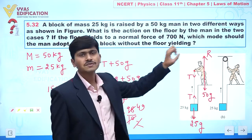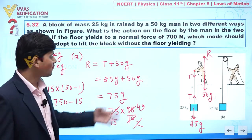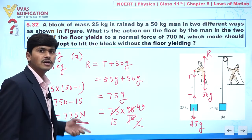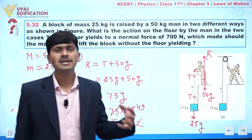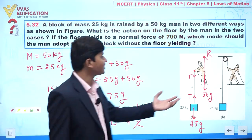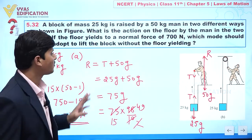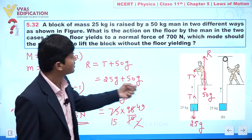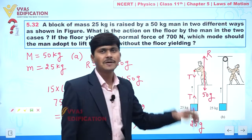The floor yields to a normal force of 700 Newton, but the reaction force calculated for method A is 735 Newton. This means we are exerting 735 Newton on the floor, which exceeds its yield strength, so the floor will collapse. Therefore, we should not adopt method A.